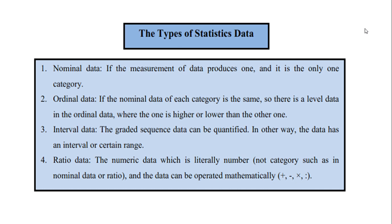There are four types of statistical data. Number one is nominal data — nominal data is when the measurement of data produces only one category. Number two is ordinal data — ordinal data is when each category has a level, where one is higher or lower than the other.